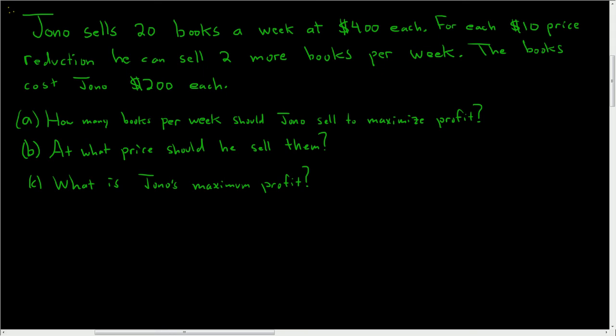Jono sells 20 books a week at $400 each. For each $10 price reduction, he can sell two more books per week. The books cost Jono $200 each. Part A: how many books per week should Jono sell to maximize profit? Part B: at what price should he sell them? And Part C: what is Jono's maximum profit?